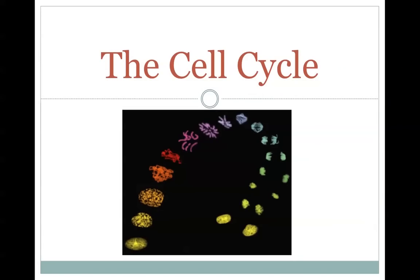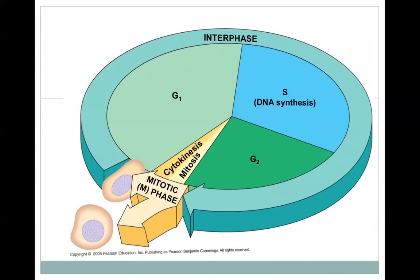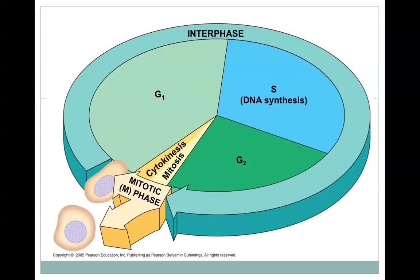The cell cycle is the overall process of cell growth and division and is generally divided into four phases. The first three make up the large phase called interphase. Those first three phases of interphase: G1, which stands for GAP or Growth Phase 1.